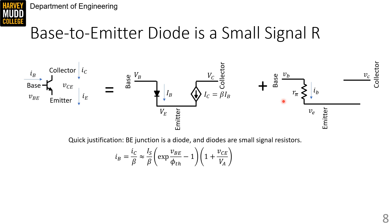We can show that formally by taking the derivative of the total signal IB with respect to small signal VBE, but we need to find IB first. And here I'm just representing it as the collector current divided by beta, which in the forward active region is given approximately by 1 over beta times I_s e to the VBE over phi TH minus 1, and then finally times this base-width modulation term.